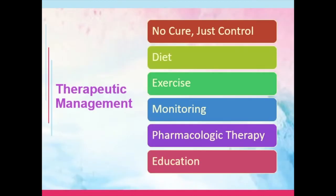Let's talk about the therapeutic management for a patient with diabetes. The big point is that there is no cure for this — it is a lifestyle disorder. Our goal is just to control the blood sugar levels of the patient. If your patient has Type 1 diabetes mellitus, your patient needs to be maintained on insulin therapy for lifetime, or else blood sugar levels would be very high and complications would occur. Diet is important, exercise will be there, monitoring — meaning regular laboratory monitoring every three to six months — pharmacologic therapy, and education. Pharmacologic therapy is not first on the list because the focus is lifestyle modification; diet and activity are considered the cornerstone in the management of diabetes.